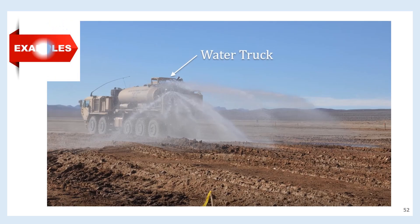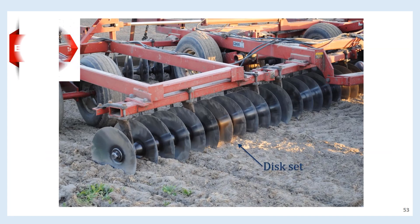Situation 5: If the fill material is not at the optimal moisture content for compaction, then it is moisture conditioned. If the soil is too dry, water must be added. Here you see a water truck spraying water across a fill area to increase the moisture content of the soil.